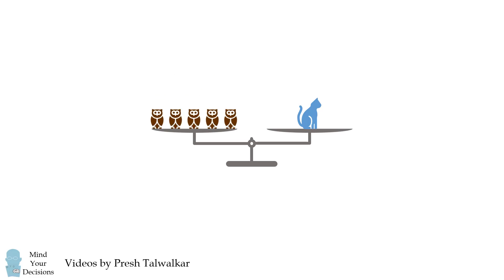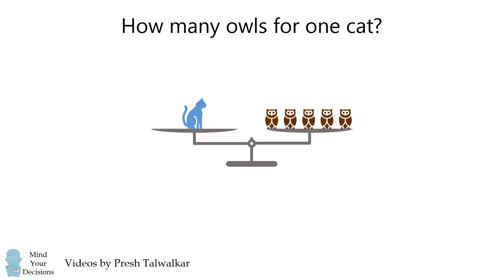We are left with one cat and five owls. And this will be our answer. It takes exactly five owls to balance one cat. And we've solved this puzzle using just logic.